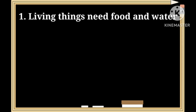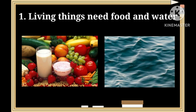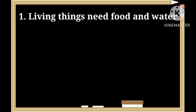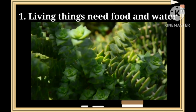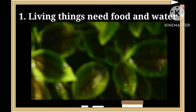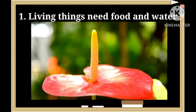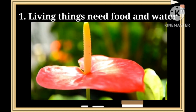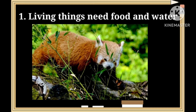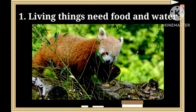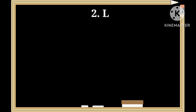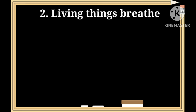Living things need food and water to obtain energy, to grow, and to stay healthy. Plants make their own food by the process of photosynthesis. Animals get their food from plants and other animals.